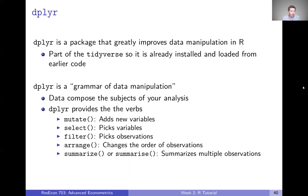dplyr is described as being a grammar of data manipulation. The idea being that your data compose the subjects and objects of your analysis, and then dplyr is going to provide the verbs that you use in your manipulation and analysis. For example, there's a mutate function that adds new variables, select that picks variables, filter that picks observations, arrange that changes the order of observations, and summarize that summarizes multiple observations.